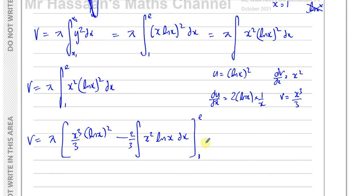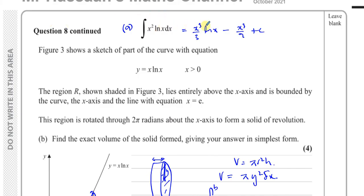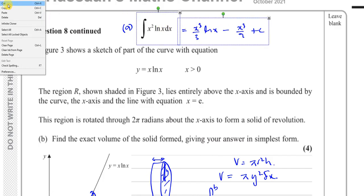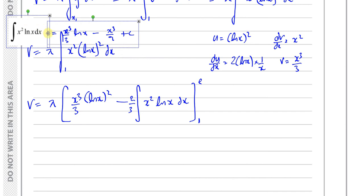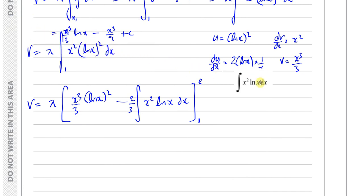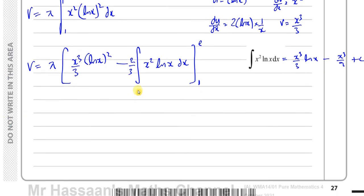What we have inside this integral happens to be exactly what we had to integrate in part A. So we can use that result now. Let me take the result from the first page and reuse it here — instead of re-integrating everything again, I can incorporate that result and replace this integral with it.